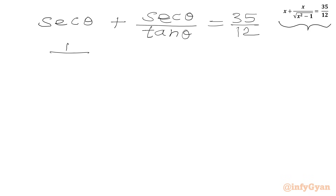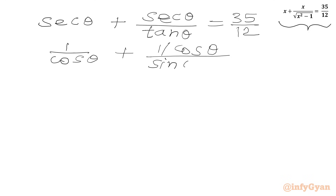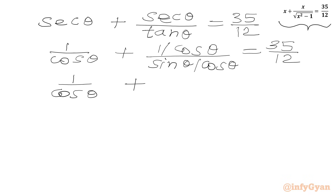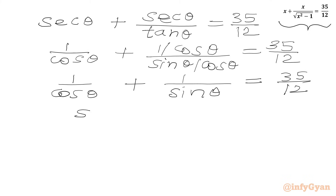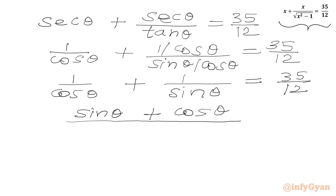Simplifying, sec θ = 1/cos θ and sec θ / tan θ = 1/sin θ. So we can write (sin θ + cos θ) / (sin θ cos θ) = 35/12, which equals 1/sin θ = 35/12 after combining over a common denominator.